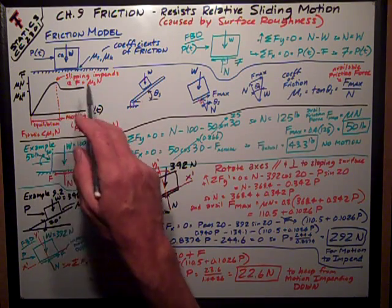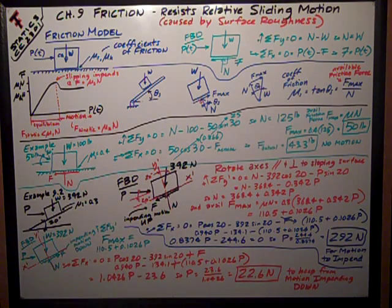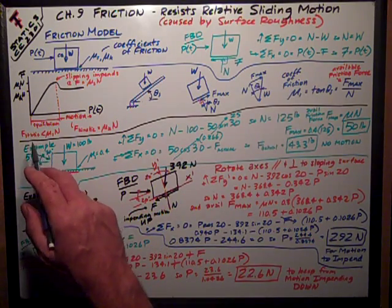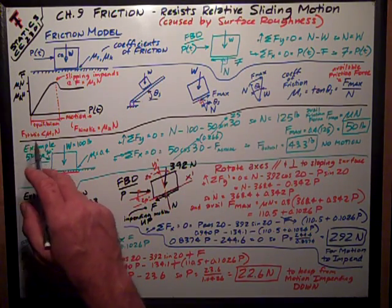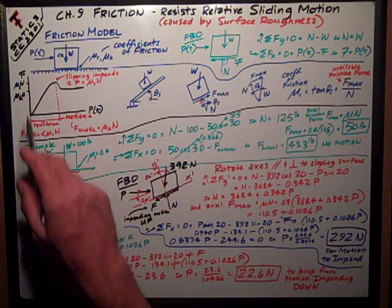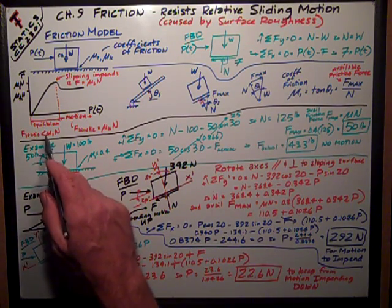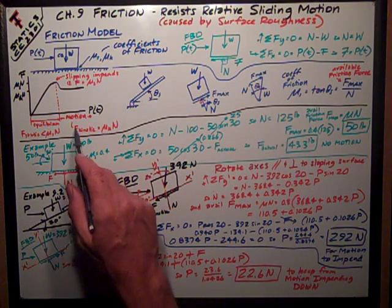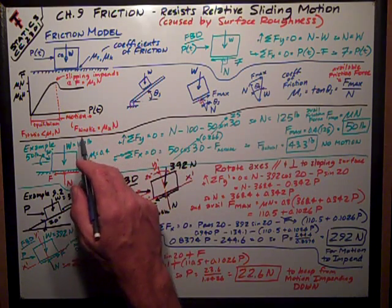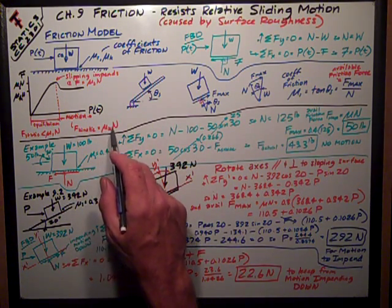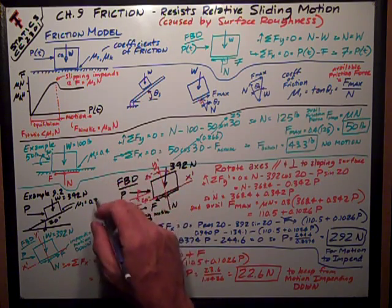This is kind of an idealized line and it's not exactly what occurs, but it's close enough. The static friction force is less than mu sub s times N while the block is in equilibrium. Once it starts moving, the kinetic friction force is equal to mu sub k times the normal force.